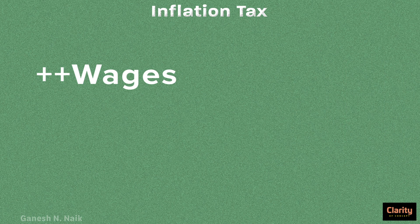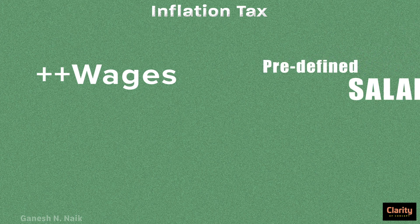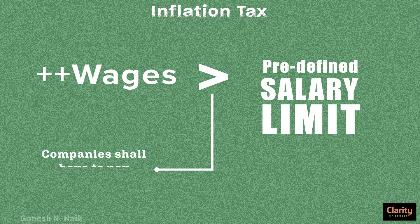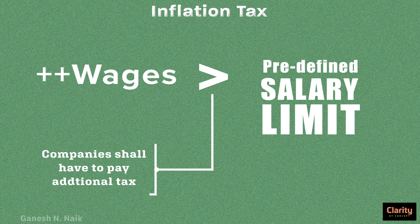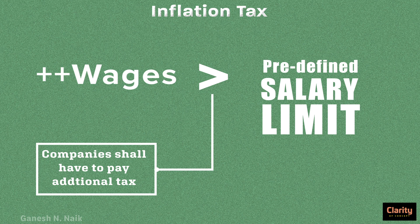All governments want to keep inflation as low as possible, so they may bring a rule: if any company pays more than the prescribed amount as salary, such company shall have to pay additional tax. If companies give more salary, the extra demand created by it can cause inflation. So, to keep inflation under control, governments may impose additional tax. This is another meaning of inflation tax. In this case, companies will actually be paying direct tax if they pay more than the prescribed salary limit.